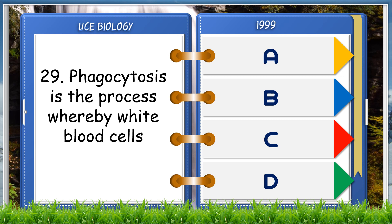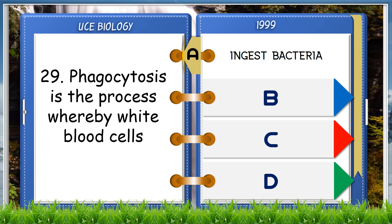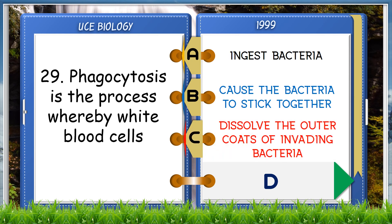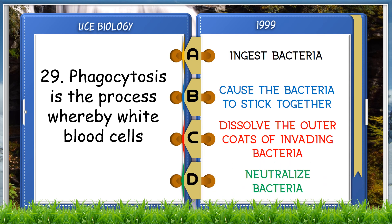Phagocytosis is the process whereby white blood cells: A. Ingest bacteria, B. Cause the bacteria to stick together, C. Dissolve the outer coats of invading bacteria, D. Neutralize bacteria. The answer is A, ingest bacteria.